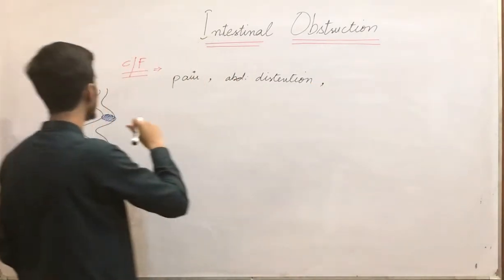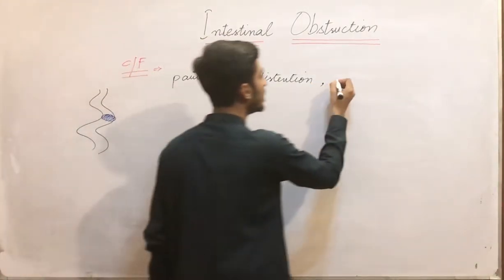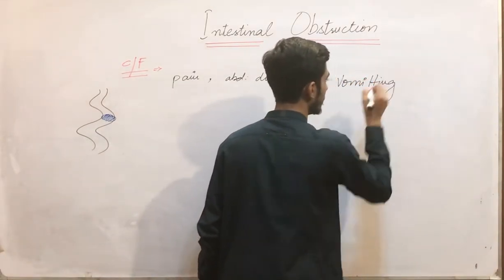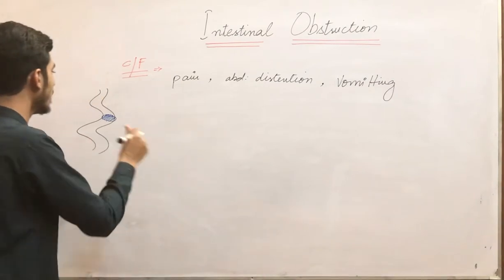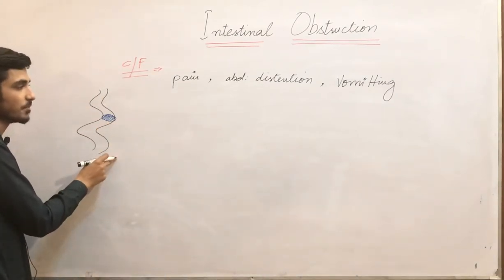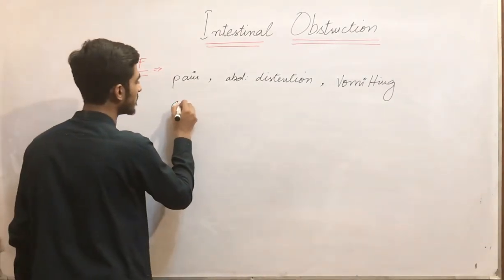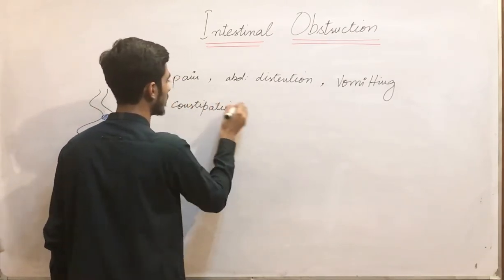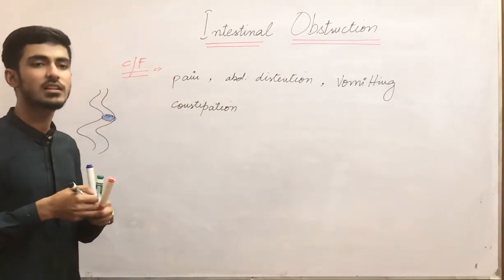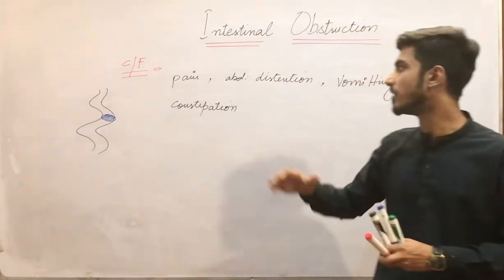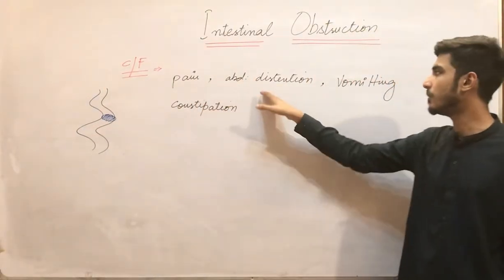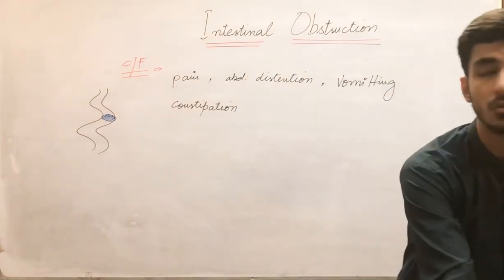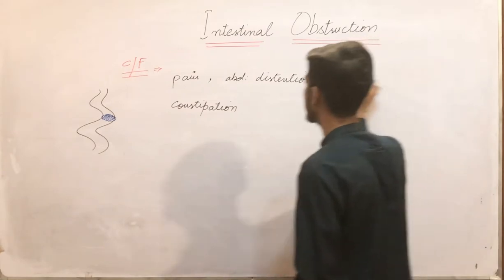The third feature is that in the later stages there will be vomiting — the patient will complain of vomiting. Distal to the obstruction, there will be constipation. So these are the clinical features: pain, abdominal distension, vomiting, and constipation. Now we are moving on to the causes of intestinal obstruction.